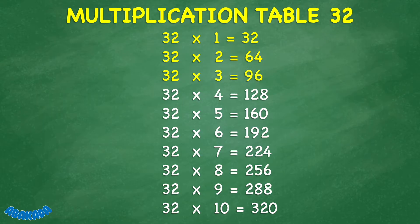32 times 4 equals 128. 32 times 5 equals 160. 32 times 6 equals 192. 32 times 7 equals 224. 32 times 8 equals 256.